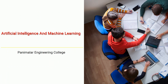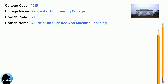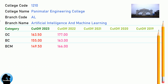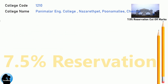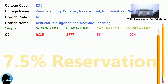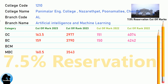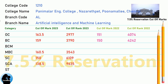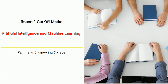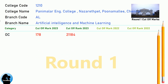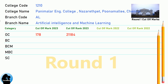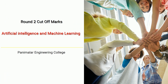DNA Cut-off for Panimalar Engineering College in Artificial Intelligence and Machine Learning. DNA 7.5 Reservation Cut-off for Panimalar Engineering College in Artificial Intelligence and Machine Learning. DNA Round 1 Cut-off for Panimalar Engineering College in Artificial Intelligence and Machine Learning.